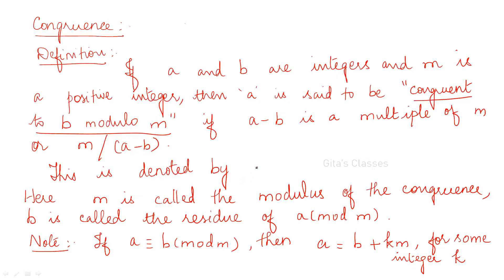This is denoted as a is congruent to b mod m — you have to write three lines for the congruence symbol. That means m divides a minus b, or a minus b is a multiple of m. Similarly, if a is congruent to b, you can say that b is also congruent to a, because if a minus b is a multiple of m, then b minus a will also be a multiple of m — one minus will be added. So a congruent to b means b congruent to a also.